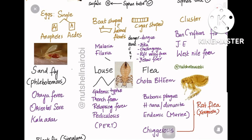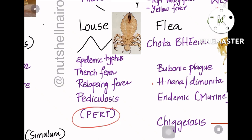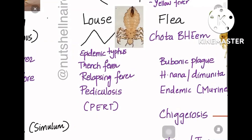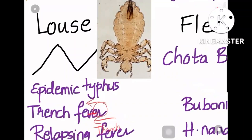For louse, the mnemonic is PERT: P is pediculosis, E is epidemic typhus — remember EP, do not confuse with endemic typhus which is by fleas. R is relapsing fever, and TRE is trench fever. So the combinations are: pediculosis, epidemic typhus, relapsing fever, and trench fever — all caused by louse.